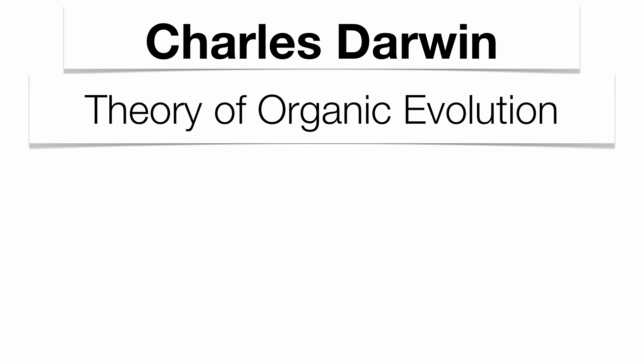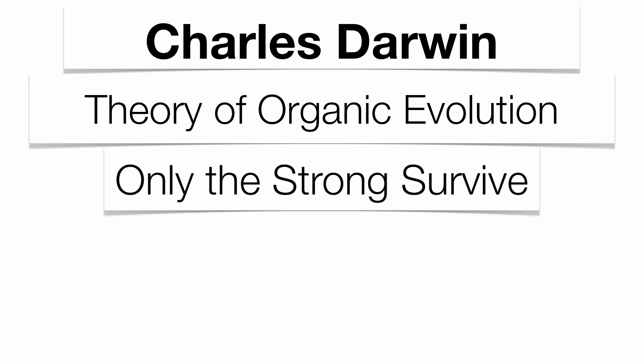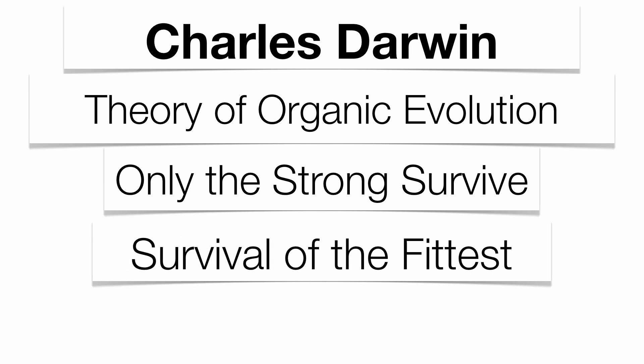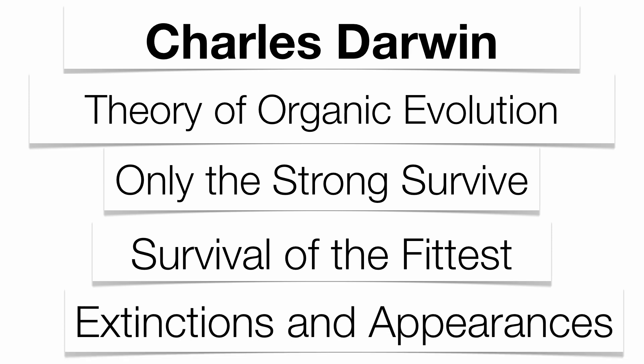Darwin did a tremendous number of studies on what he called the theory of organic evolution, which basically stated that only the strong survive — or survival of the fittest. Organisms with strong genes will survive the test of time, while organisms with weaker genes will tend to die off in what we call extinctions. So we see both extinctions and appearances of species as time goes on.